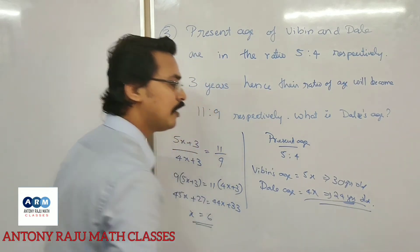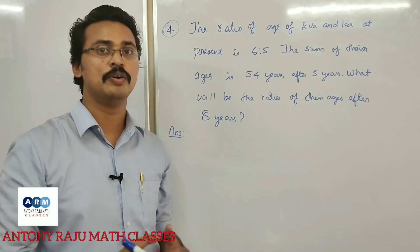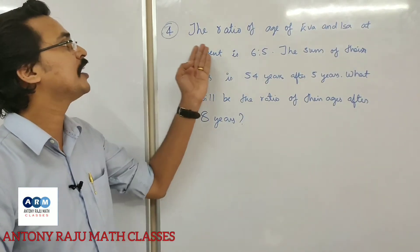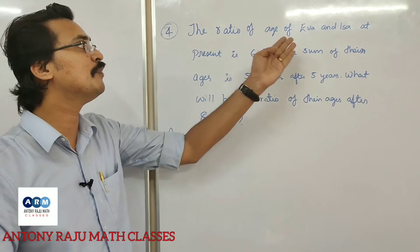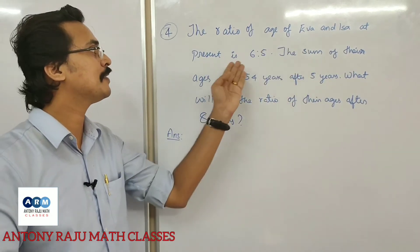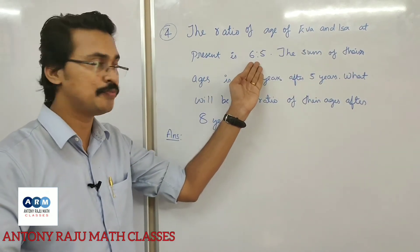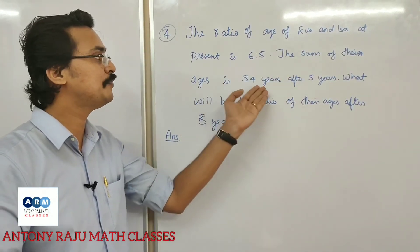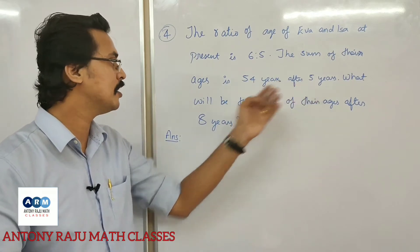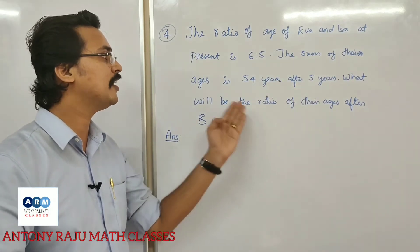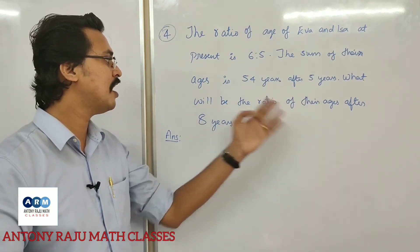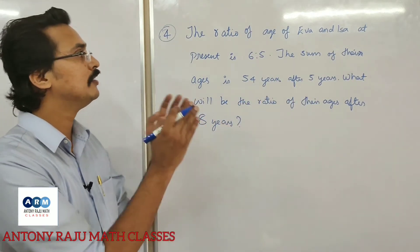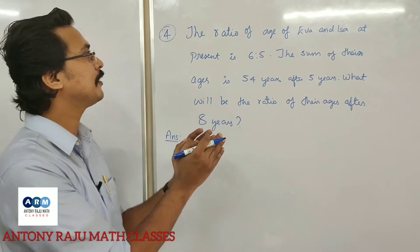The fourth question: the ratio of the ages of Iba and Isa at present is 6 to 5. The sum of their ages is 54 years. What will be the ratio of their ages after 8 years?